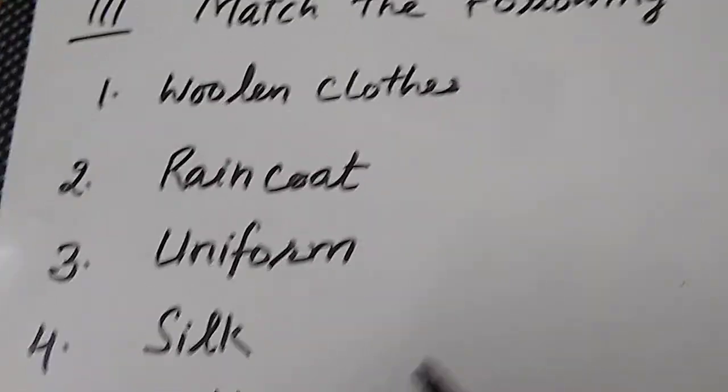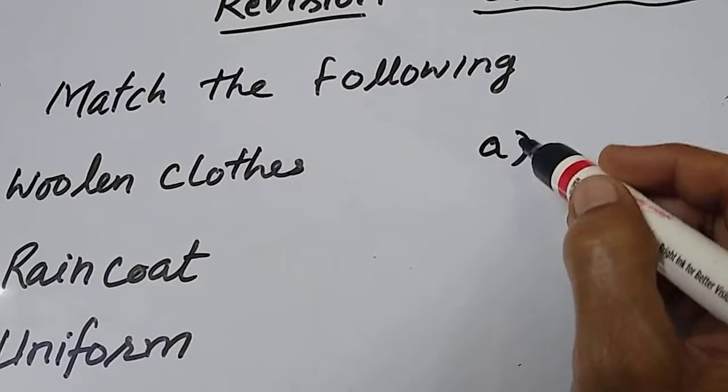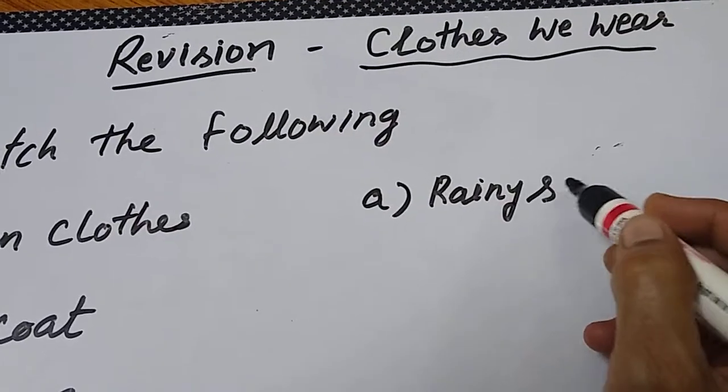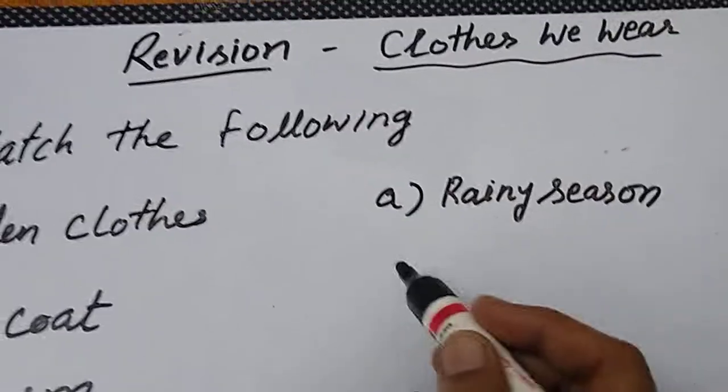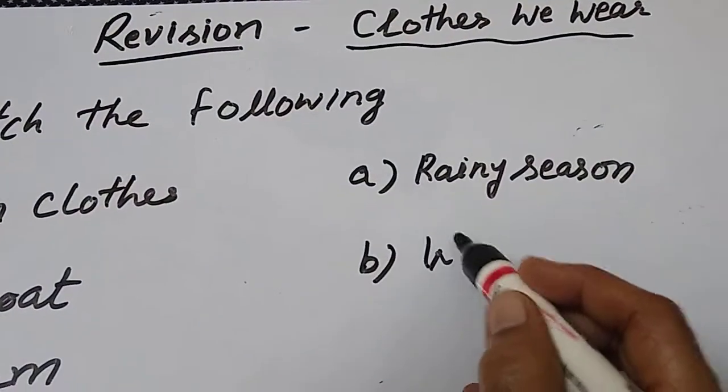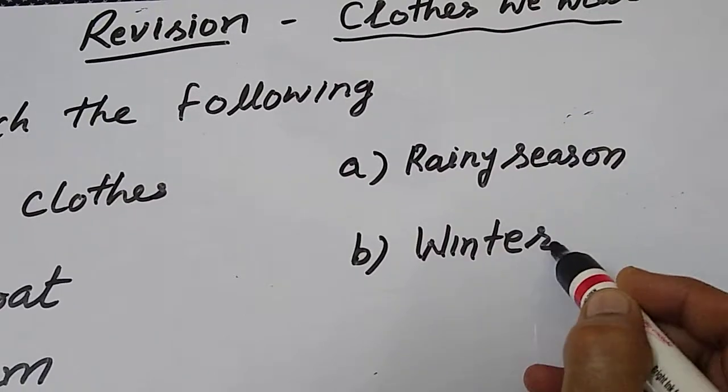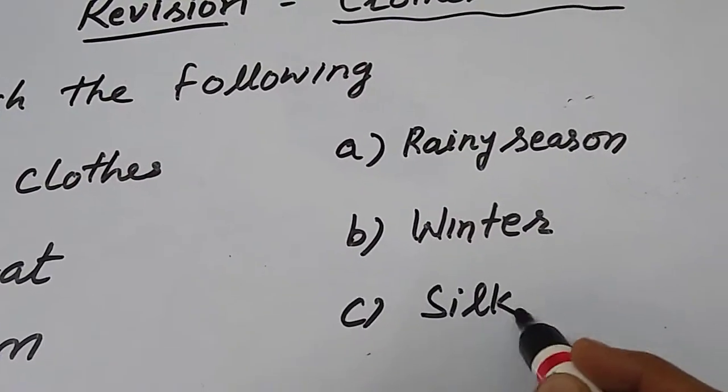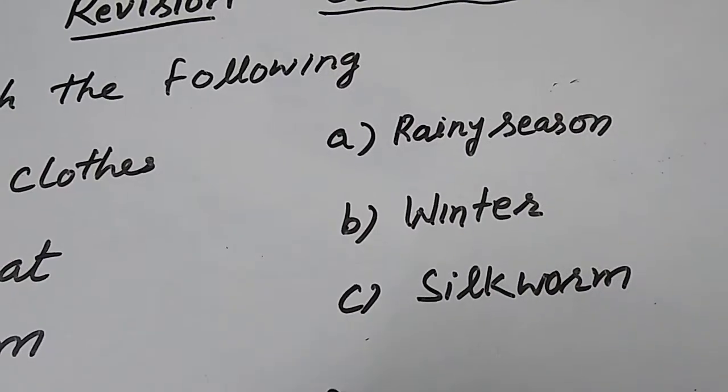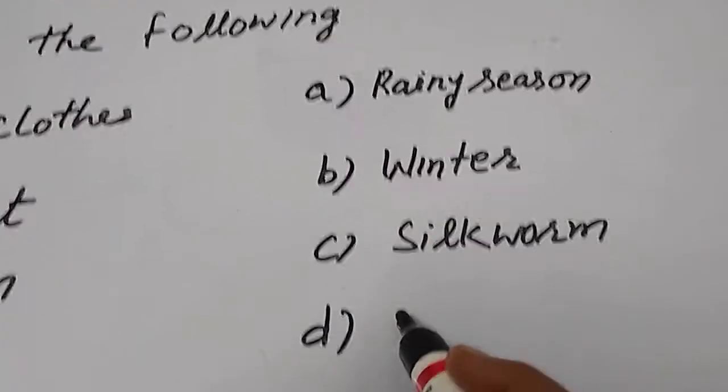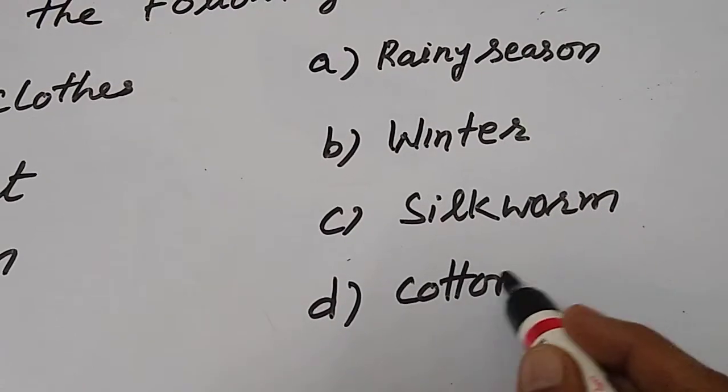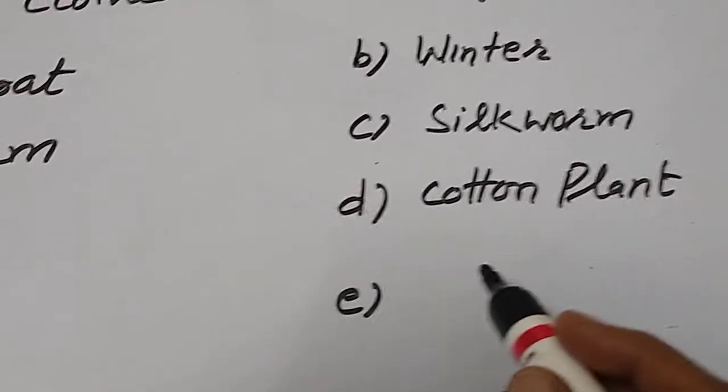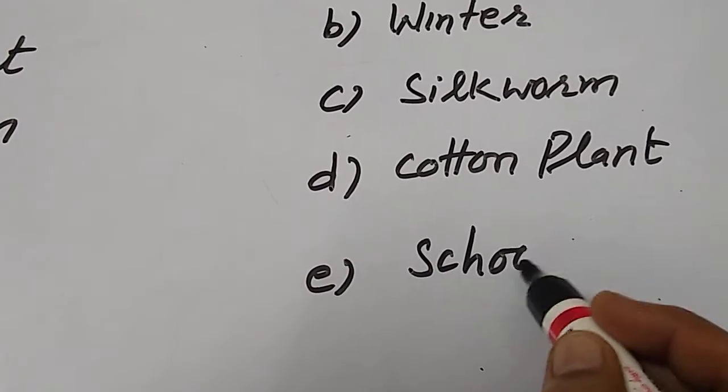Now we have to match with the words. First I am writing the word. What is that? Rainy season. B. Winter. C. Silkworm. D. Cotton plants. And E. School.